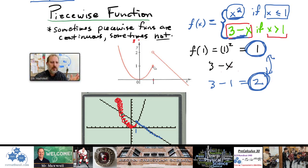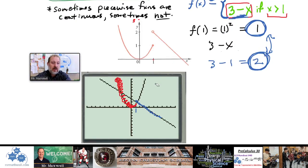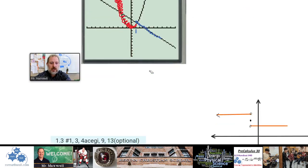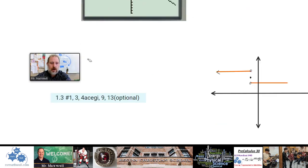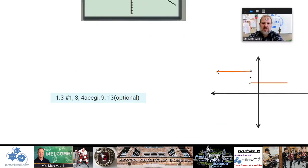The bottom line for this concept is that you have pieces of multiple functions, and you may have to graph each individual piece over its specified domain. Then you can see if they are continuous — if they match up or not.